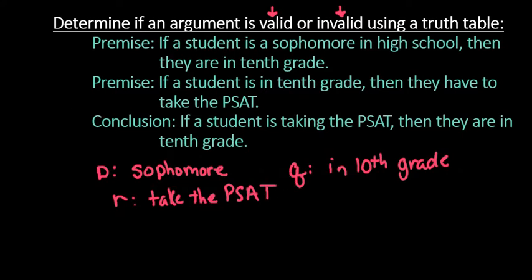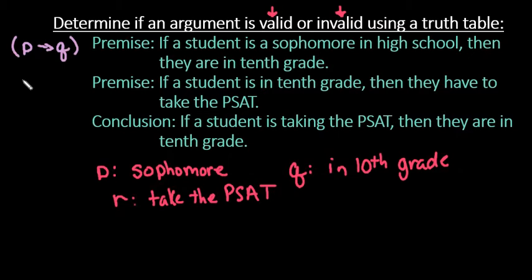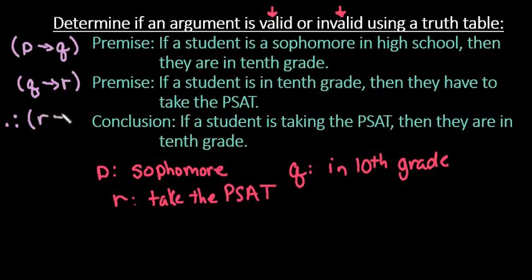We're going to write each of these statements in symbolic form. Our first premise is if a student is a sophomore — so if P — then they are in 10th grade, so then Q. Our second statement is if a student is in 10th grade, so if Q, then they take the PSAT, which is R. And our conclusion — we use three dots to represent 'therefore' — is if R, then Q.